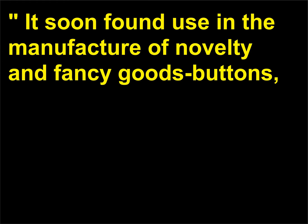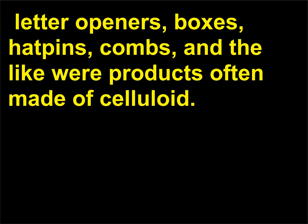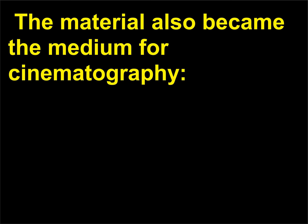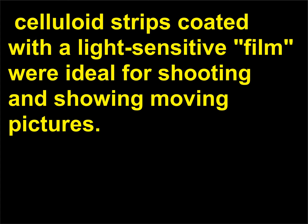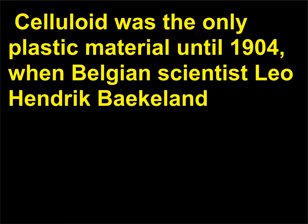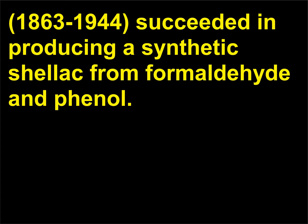Celluloid soon found use in the manufacture of novelty and fancy goods — buttons, letter openers, boxes, hat pins, combs, and the like. The material also became the medium for cinematography; celluloid strips coated with a light-sensitive film were ideal for shooting and showing moving pictures. Celluloid was the only plastic material until 1904, when Belgian scientist Leo Hendrik Baekeland (1863–1944) succeeded in producing a synthetic shellac from formaldehyde and phenol.